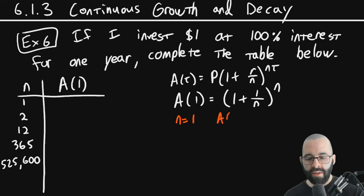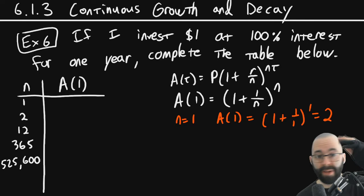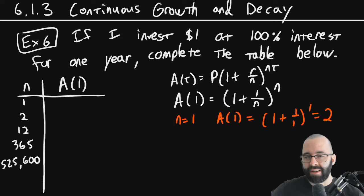If you plug in n equals 1, then A(1) is going to give you 2. It's going to be (1 + 1/1) to the 1st power. And you can keep on doing this and fill in this table. I'm going to save you a little calculator effort. It'd be great practice to pause the video and do this yourself. But I'll save you the calculator effort if you want.